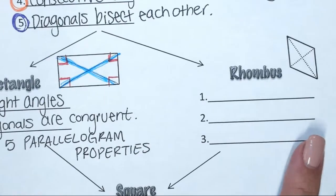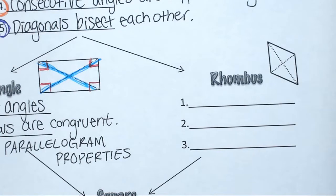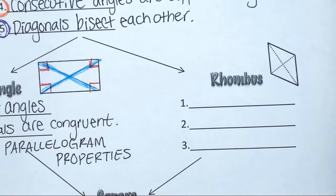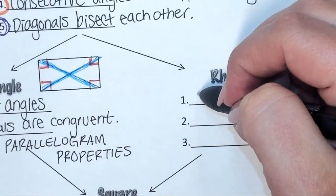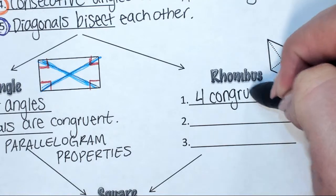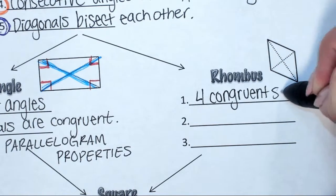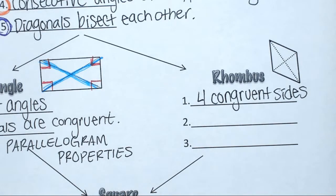Moving on to rhombus. Does anyone remember anything about a rhombus, like any of the properties? You learned it at some point in time — might have been a while ago. Probably the only one you could have remembered was that a rhombus has four congruent sides. So a rhombus has four congruent sides.